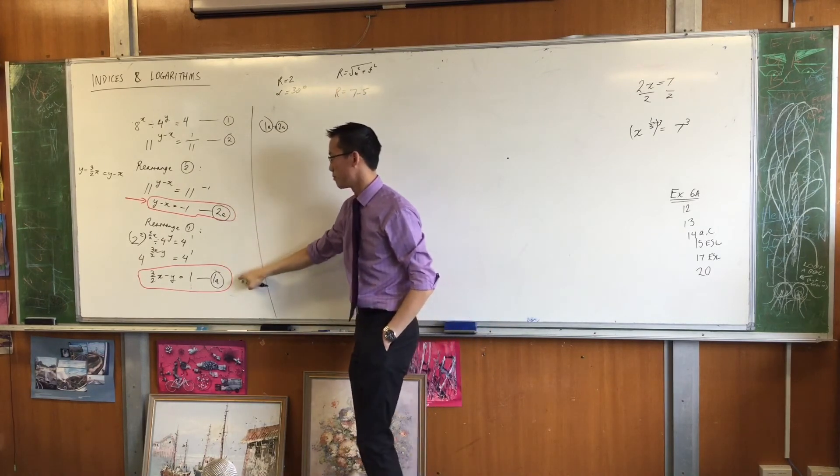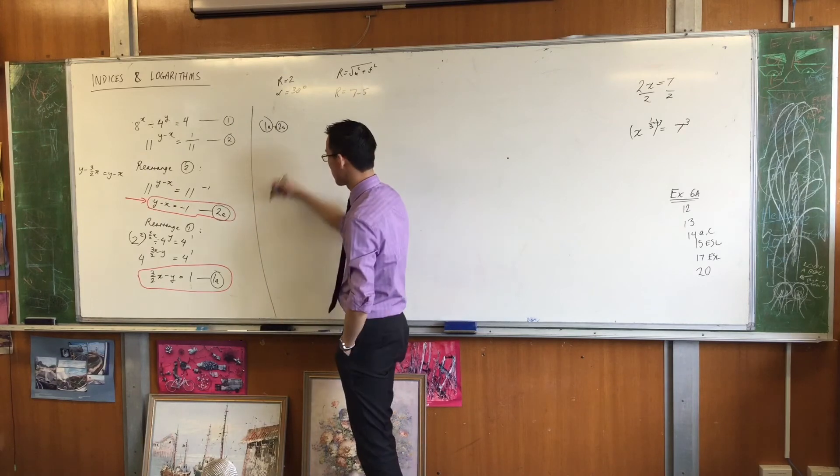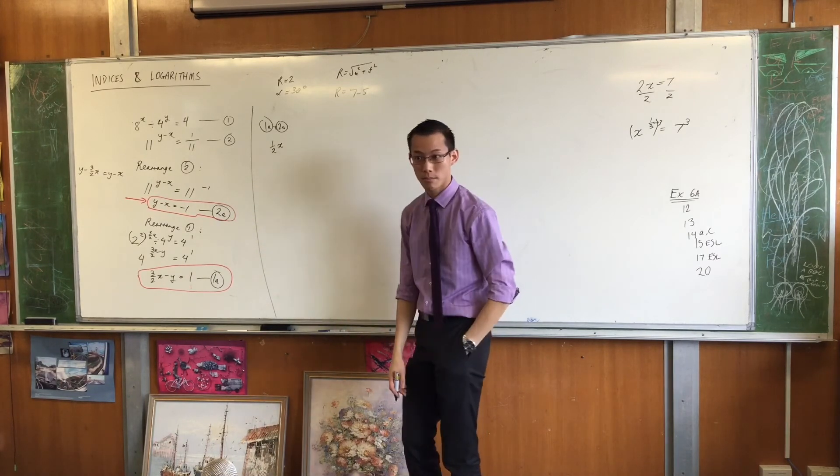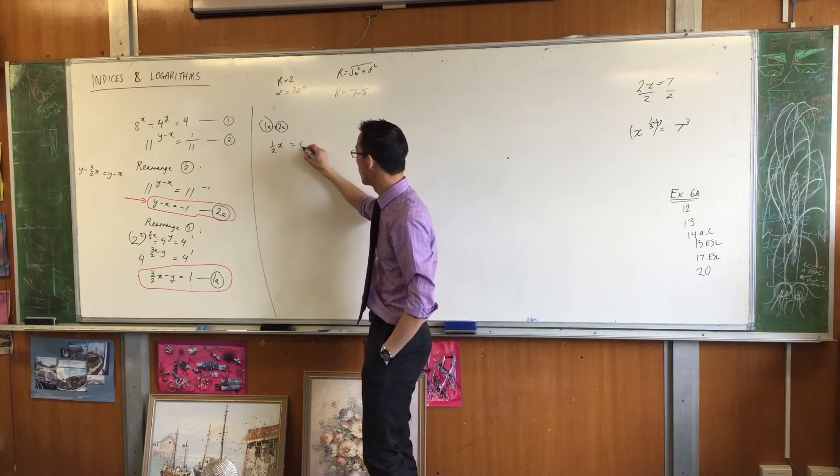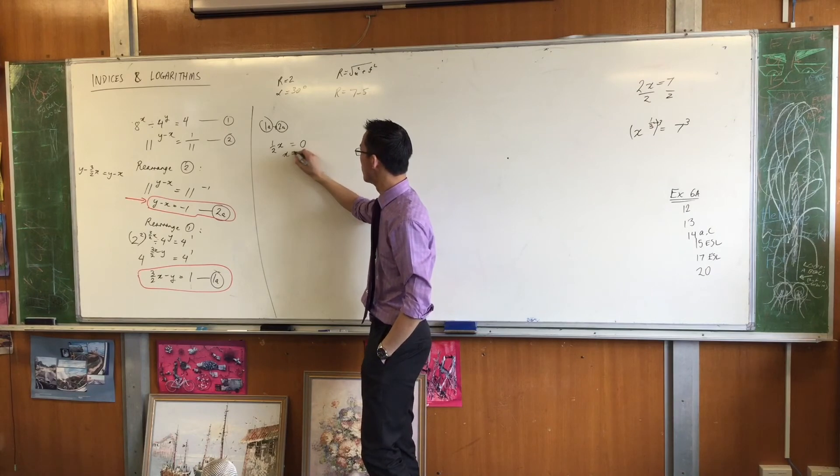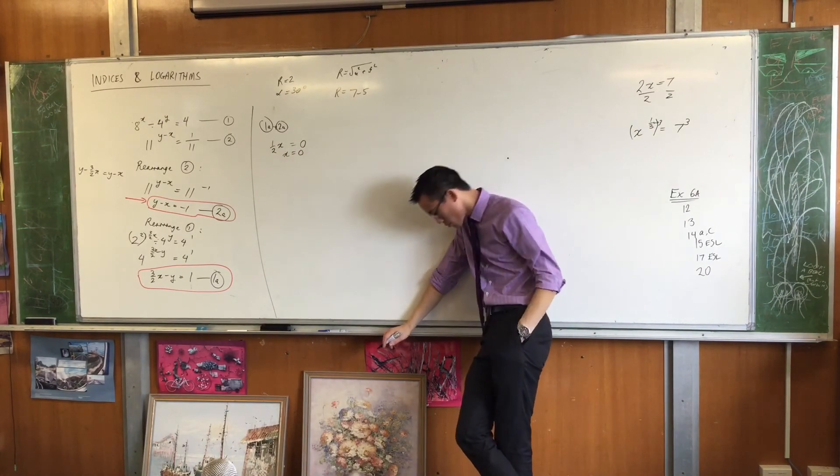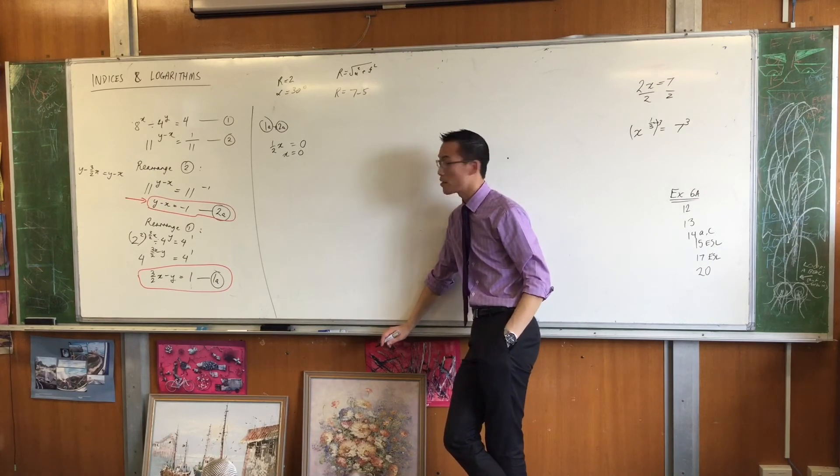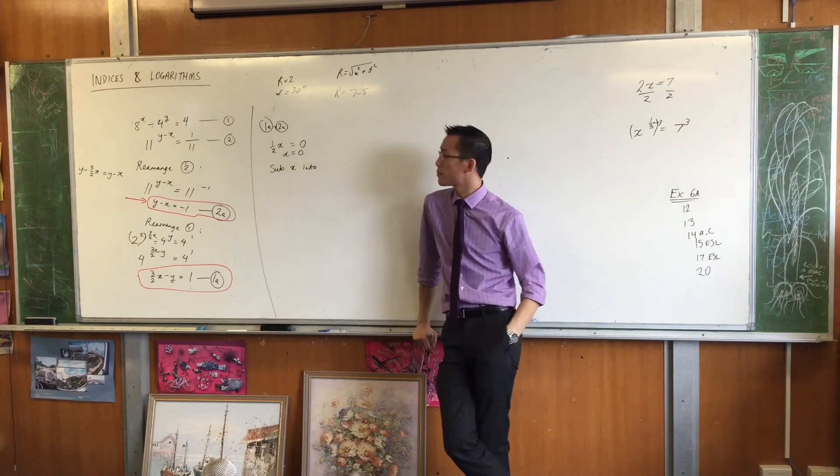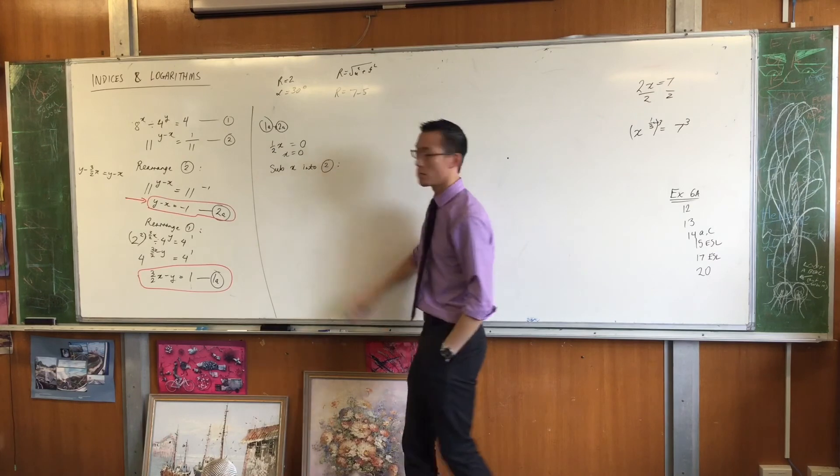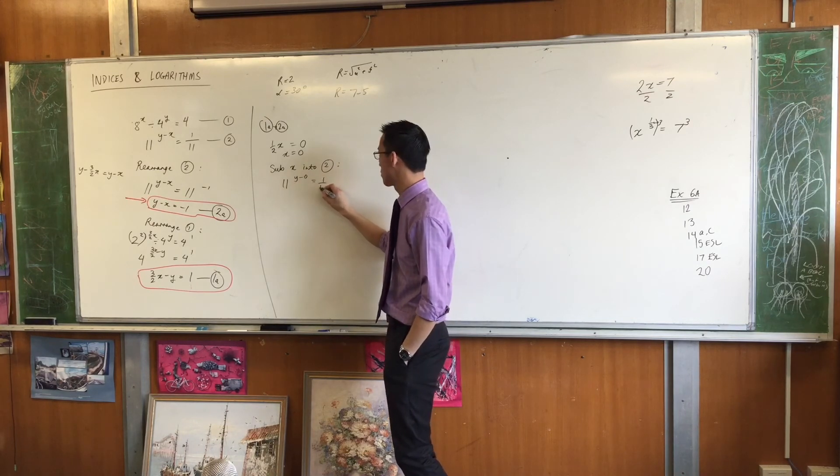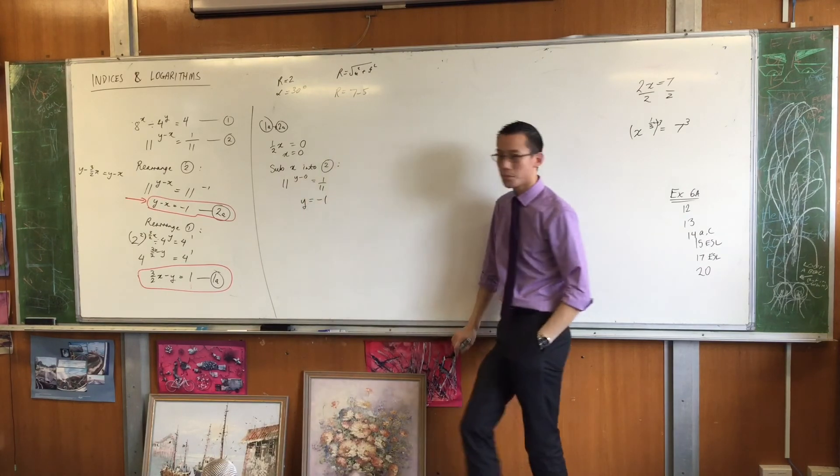What am I going to get on the left? Have a look. Is that what I'm going to get? Yeah. How many y's am I going to get? Good. What are you going to get on the right? I'm adding 1 and negative 1. Is that what you expected? No. Let's see what happens. Where would you like me to put this? I'm going to substitute x into something. 2 minus 2. 2. So, 11 to the power of y minus 0 equals. So what's y? Negative 1.